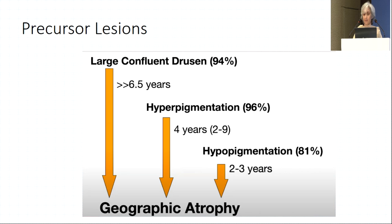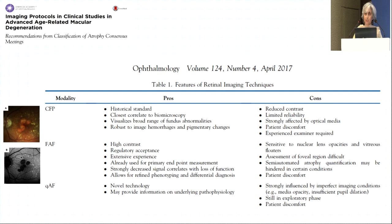How long do precursor lesions take to reach geographic atrophy? Hypopigmentation surprisingly has the shortest interval, whereas large confluent drusen — something we all recognize — takes almost six and a half to seven years before progressing to geographic atrophy. The various imaging protocols we now use include color fundus photography, which works well in pigmented eyes, and fundus autofluorescence, which helps recognize atrophic changes with loss of FAF signal and study of the junctional zone.